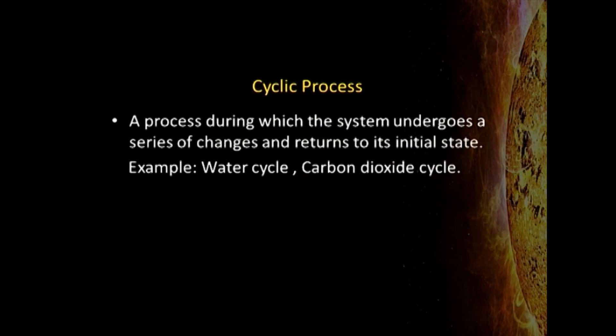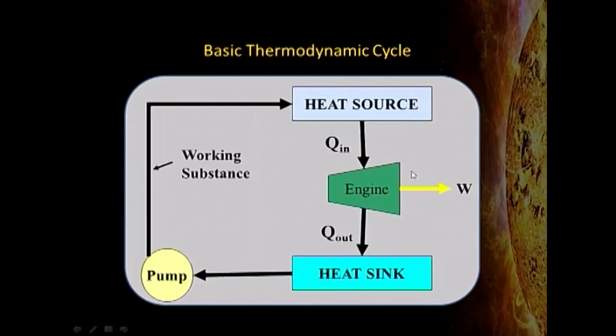In a cyclic process, a system goes from one state through a number of intermediate states and then returns to the initial state — like the water cycle or the carbon dioxide cycle. In thermodynamics, we are concerned with the working of an engine containing a gas that can expand: it takes up heat from a source, does some work, and rejects the remainder to a sink. This is how any automobile engine works, and it is a cyclic process because energy returns to the source.